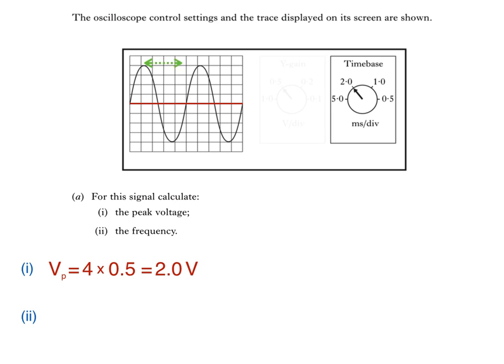Which in this case is 5. We then multiply this by the time-based setting, which is 2 milliseconds per division. So the period T is 5 multiplied by 2 times 10 to the minus 3, which is 0.01 seconds. The frequency is equal to 1 over the period, which is 1 divided by 0.01, which works out as 100 Hz.